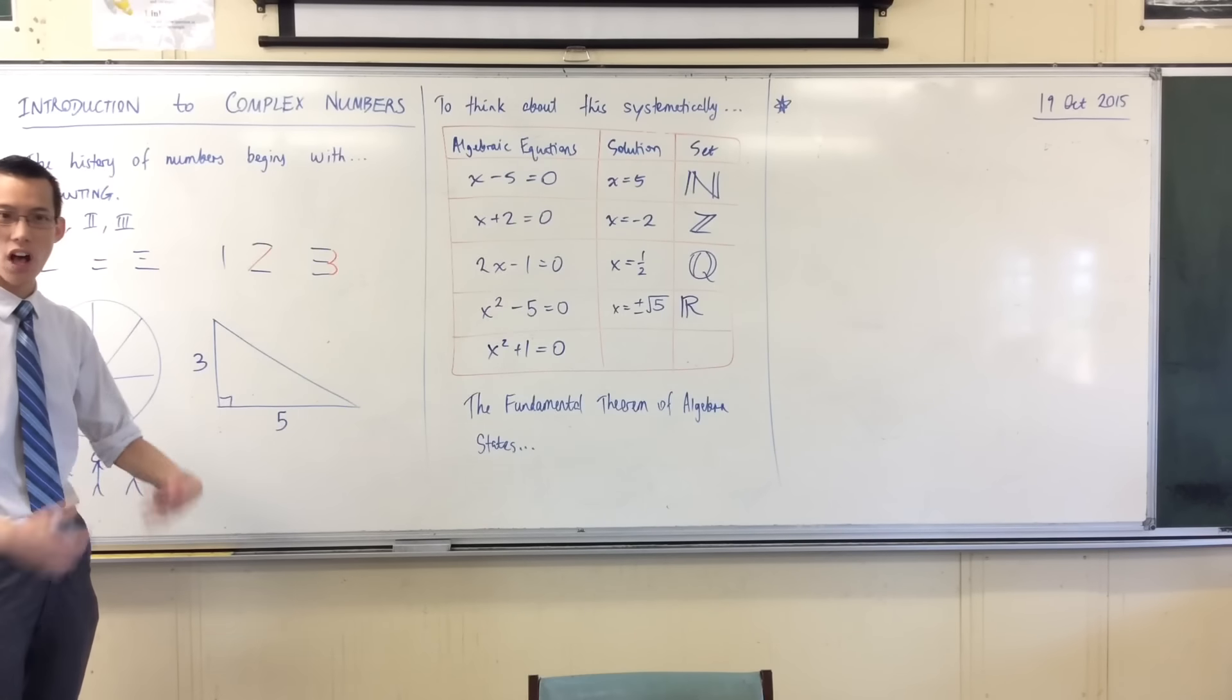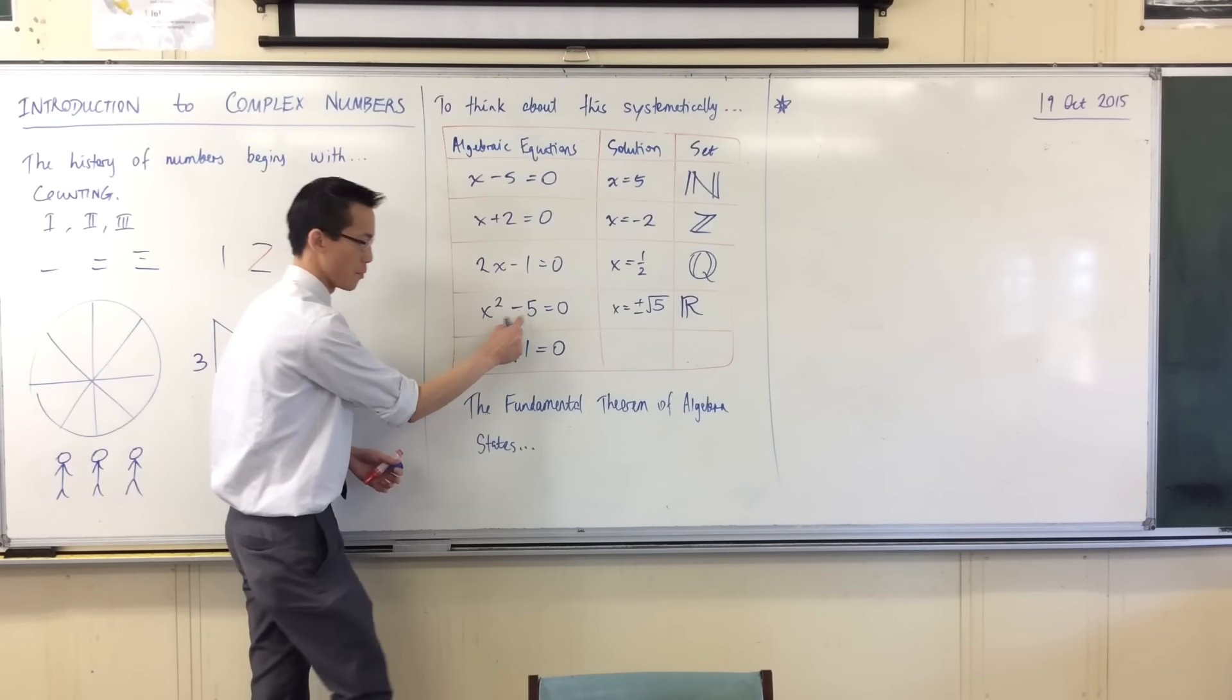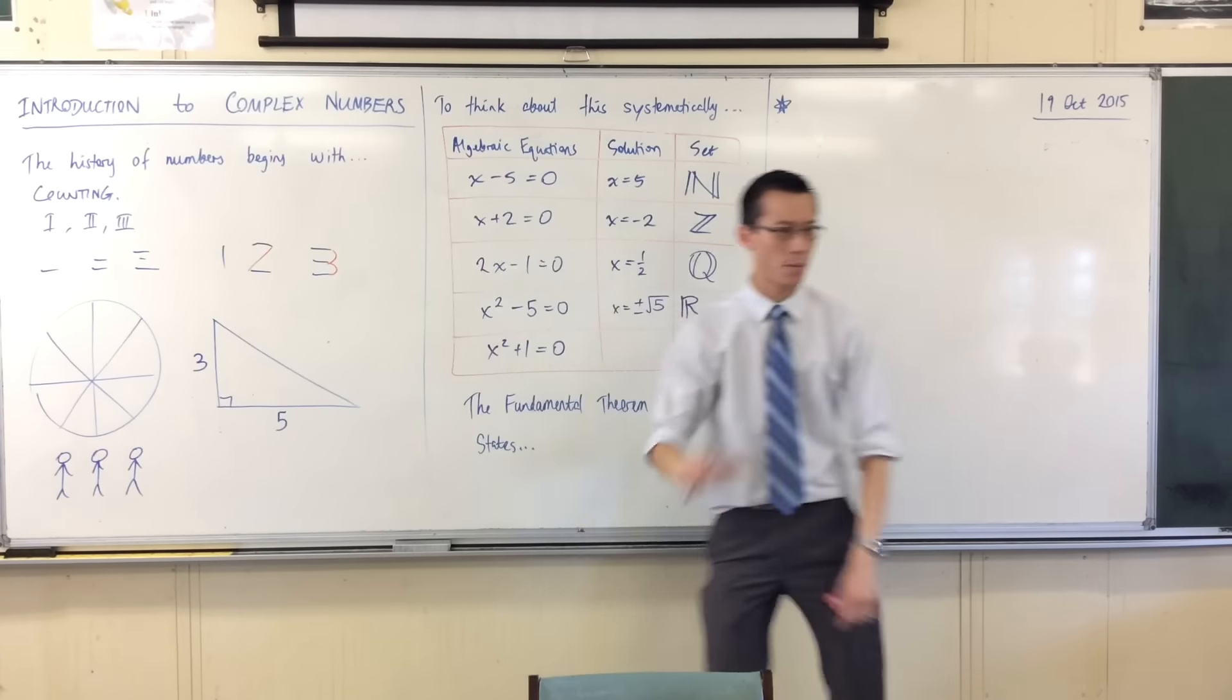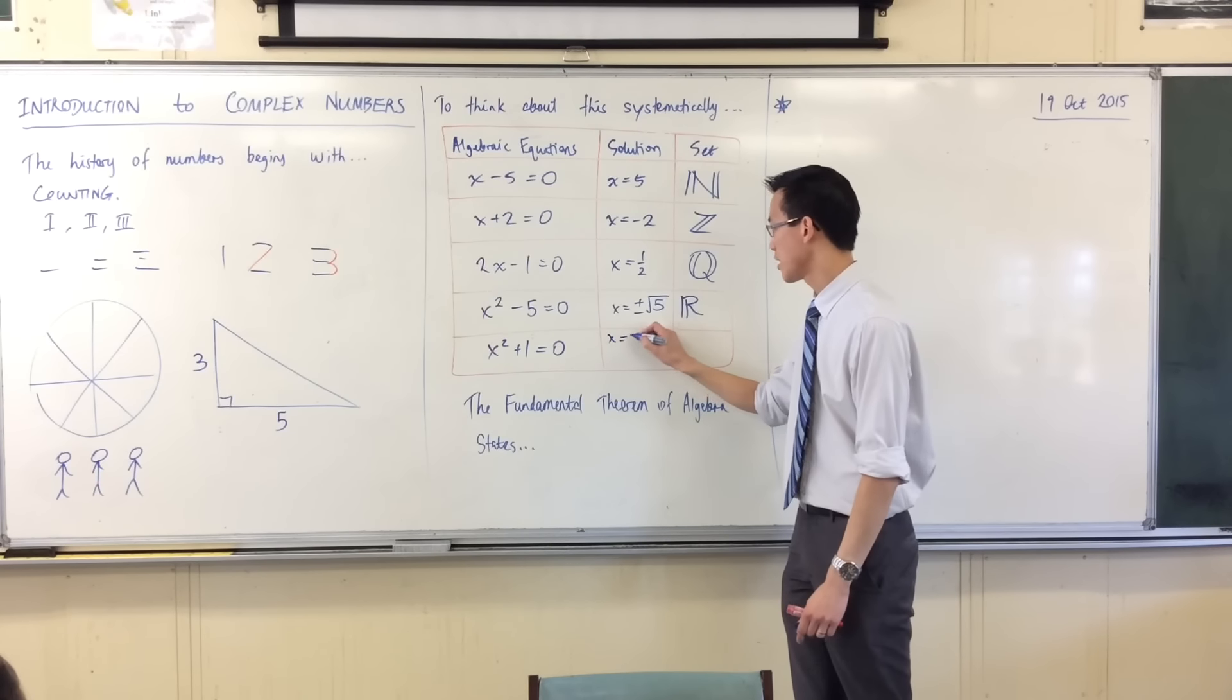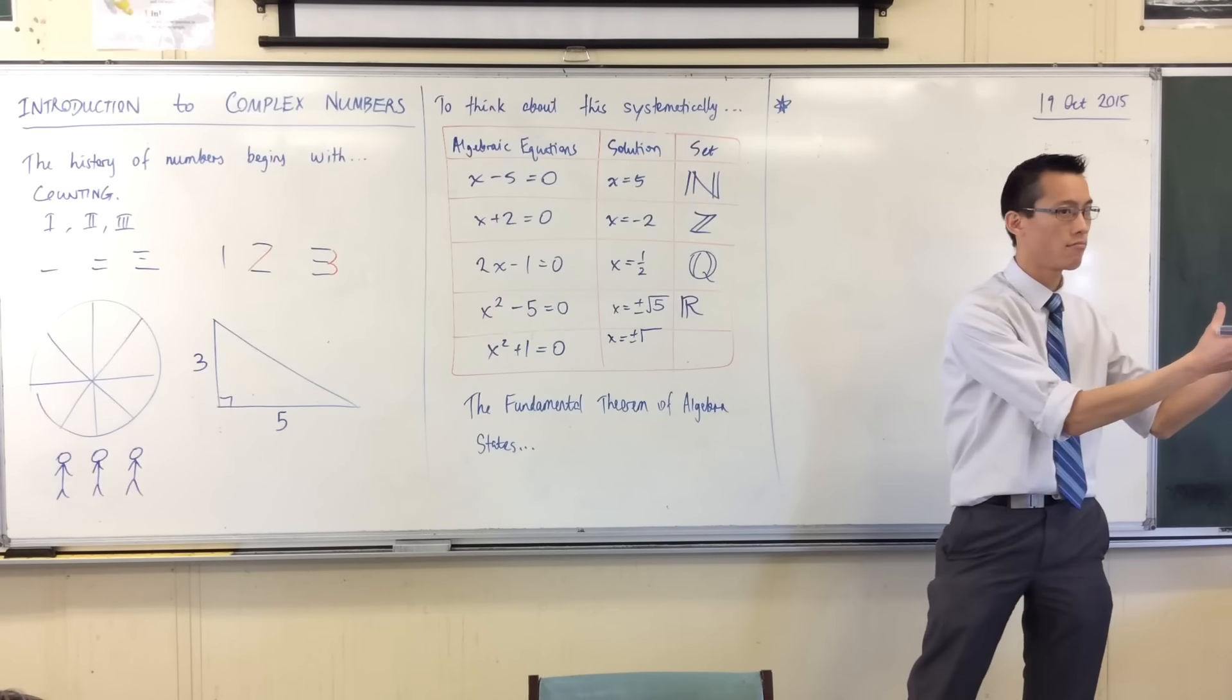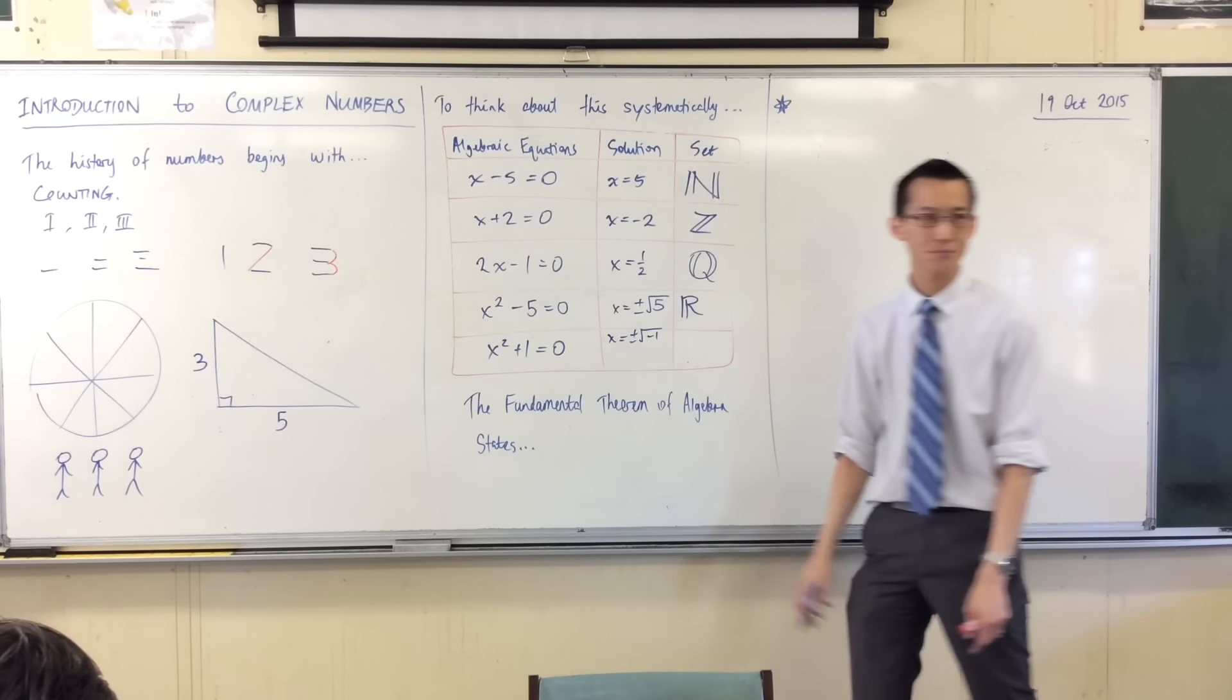Now, using the same kinds of rules and operations to get my solution from here to here, my solution to this is going to be, we're going to use two lines here, so try and squeeze it in, is going to be firstly plus or minus the square root of, well, that one's going to come over the other side, which leaves me with negative 1, and then I take the square root.